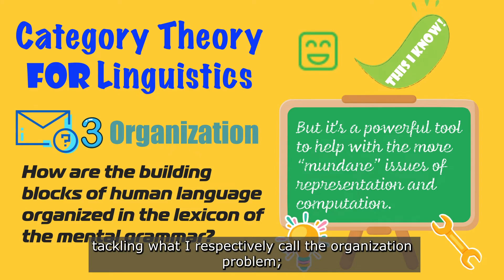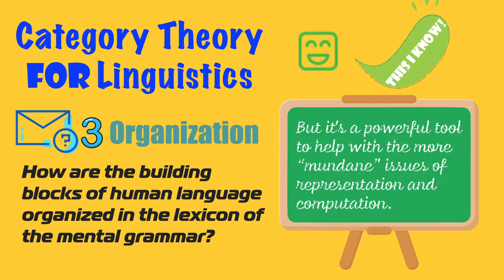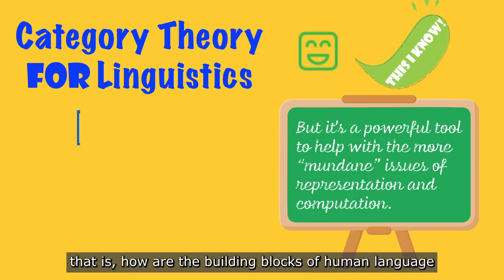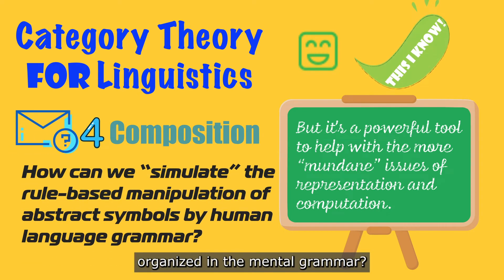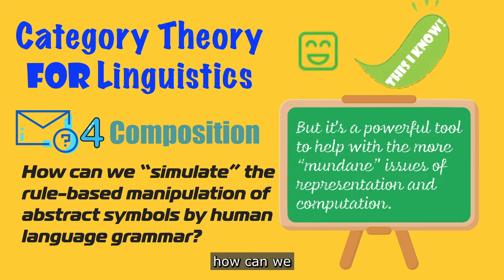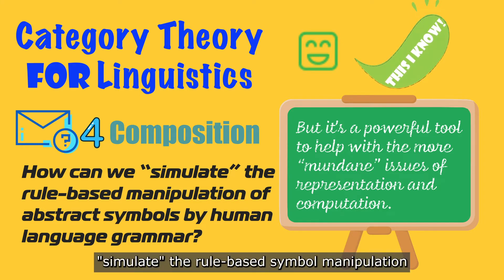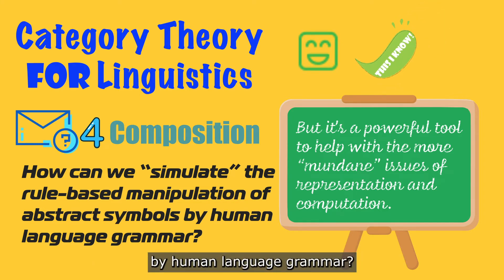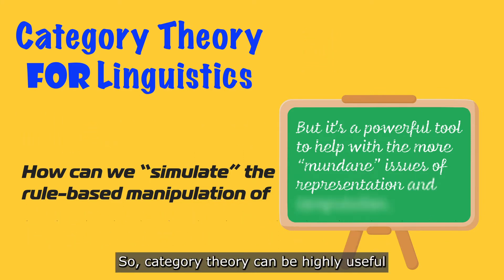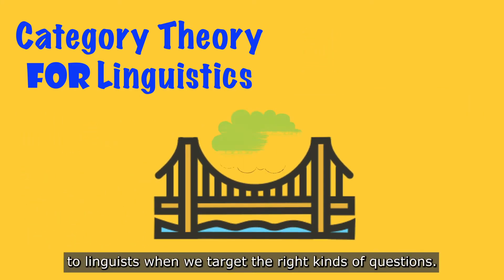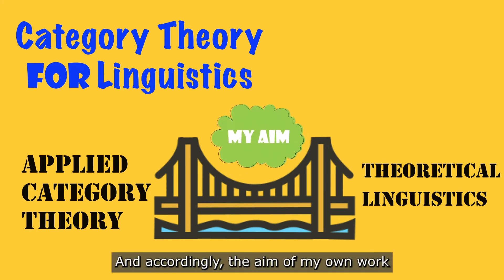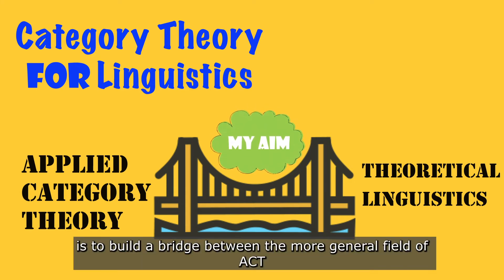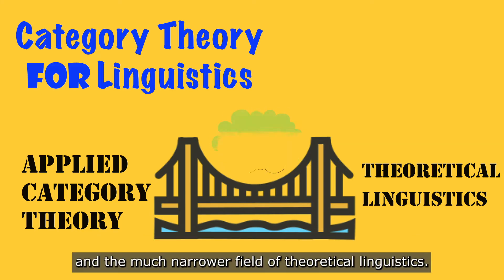However, it is no doubt a powerful tool that could help linguists with the more mundane issues of structural representation and formal computation — tackling what I respectively call the organization problem, that is, how are the building blocks of human language organized in the grammar, and the composition problem, that is, how can we simulate the rule-based manipulation by human language grammar. So, category theory can be highly useful to linguists when they target the right kinds of questions, and accordingly, the aim of my own work is to build a bridge between the more general field of ACT and the much narrower field of theoretical linguistics.